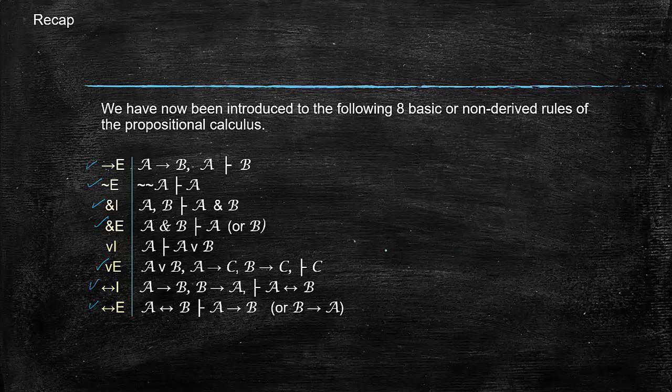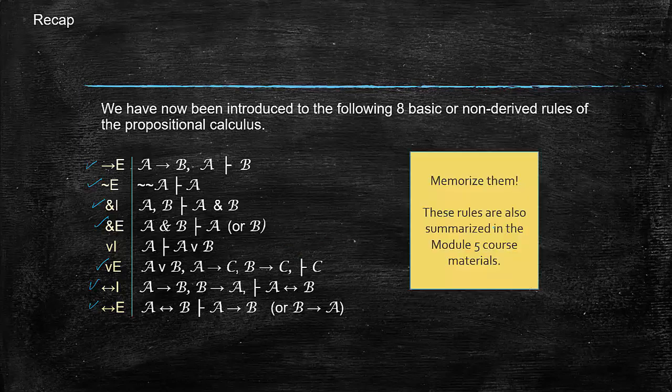You'll notice that we didn't try to prove them. We just stated them. They can be justified by reference to truth tables, as we've explained before. But the important thing to do, practically speaking, is to really memorize them. You'll need to memorize them. You'll need to have these as a part of your mind in order to be able to do these proofs efficiently.